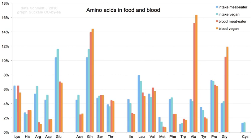Below pH 2.2, the predominant form will have a neutral carboxylic acid group and a positive alpha ammonium ion, and above pH 9.4, a negative carboxylate and neutral alpha amino group. But at pH between 2.2 and 9.4, an amino acid usually contains both a negative carboxylate and a positive alpha ammonium group, so has net zero charge. This molecular state is known as a zwitterion, from the German 'zwitter' meaning hermaphrodite or hybrid. Amino acids exist as zwitterions also in the solid phase, and crystallize with salt-like properties unlike typical organic acids or amines.